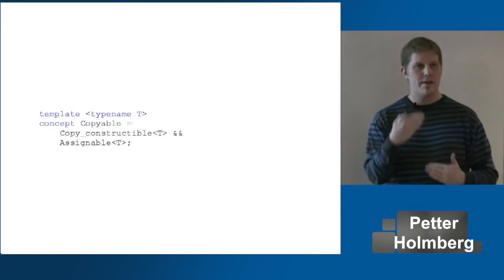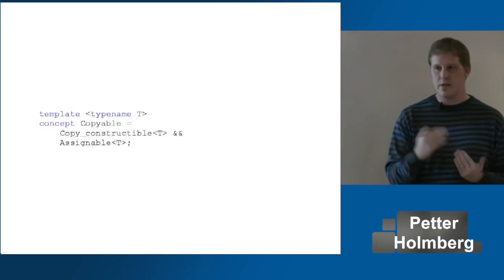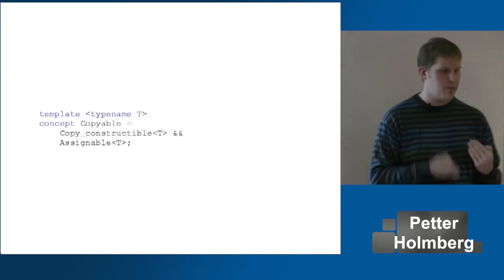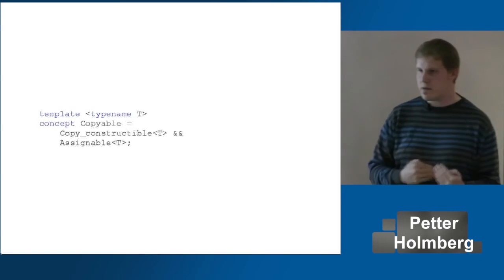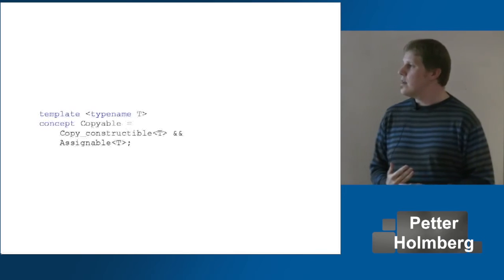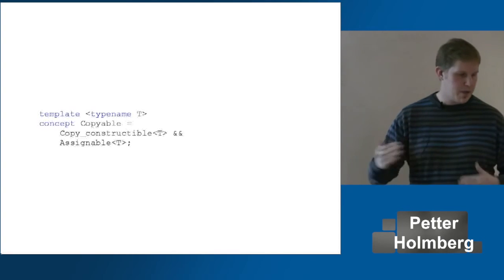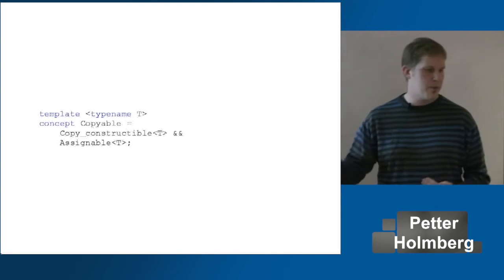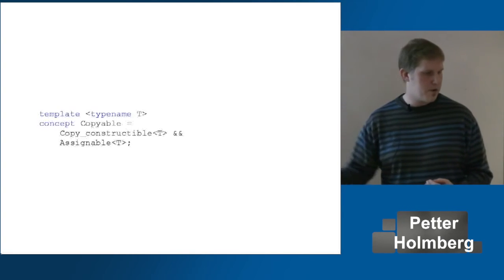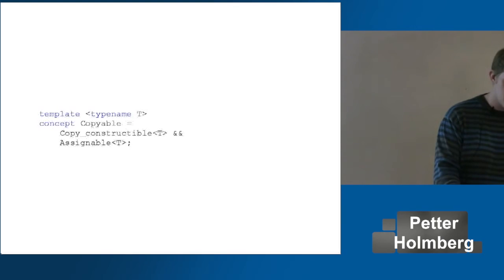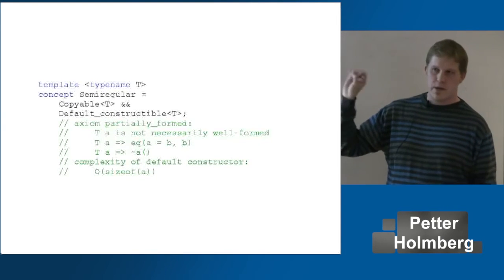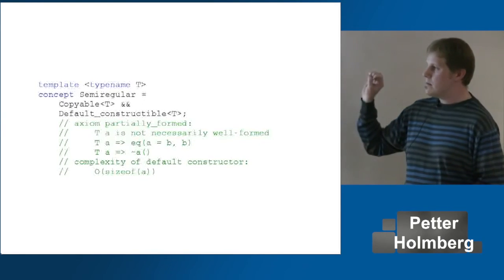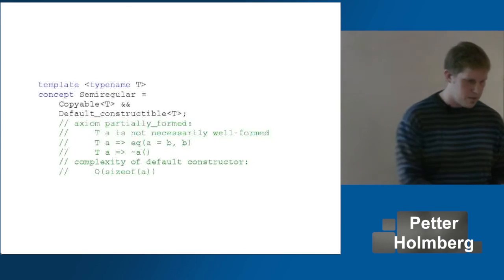There are two ways to create copies that should act the same. When you implement one, you should always implement the other. So we can group them into a concept 'copyable' if you're both copy constructible and copy assignable. And say that a semi-regular type should be copyable and default constructible.